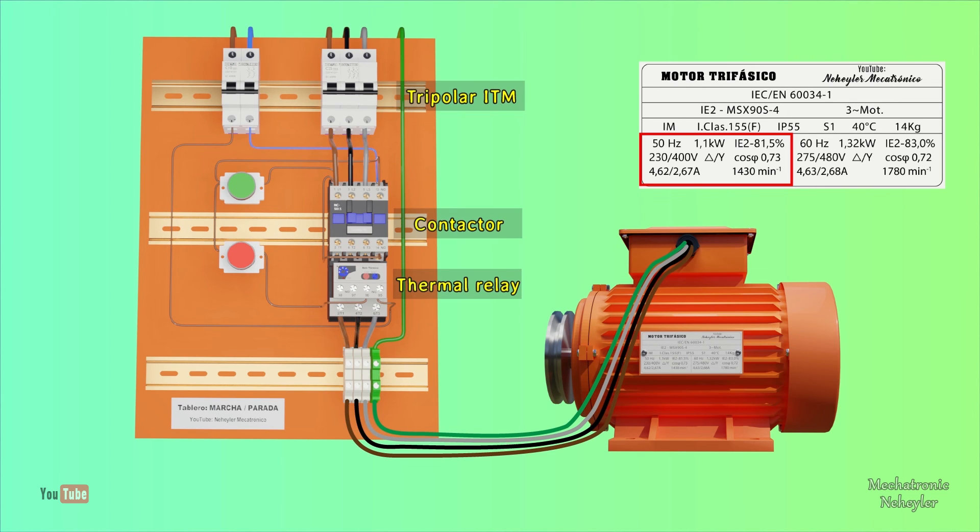The thermal relay is the element in charge of protecting the motor, therefore its current must be adjusted to the value of the rated current of the motor. For this case at 2.67 amps, or at its closest value of 2.75 amps.